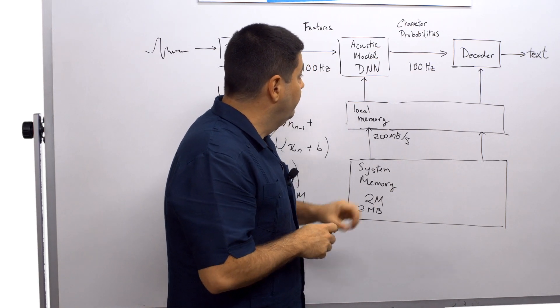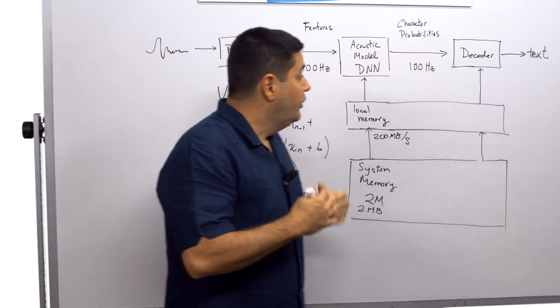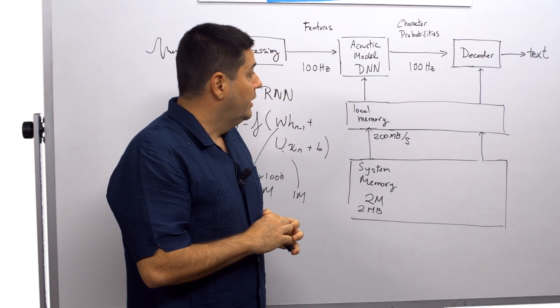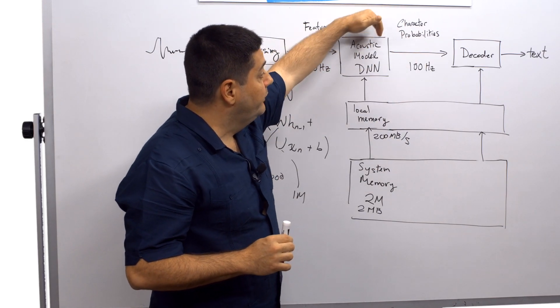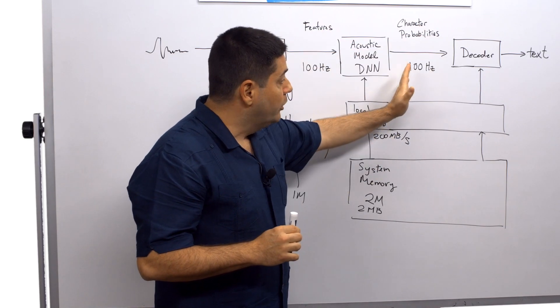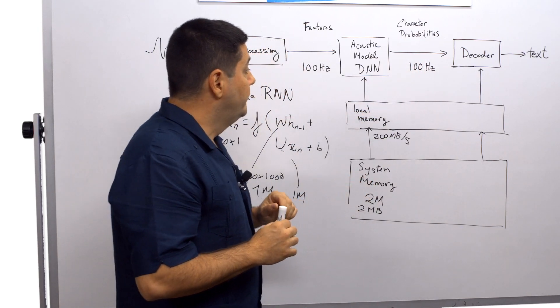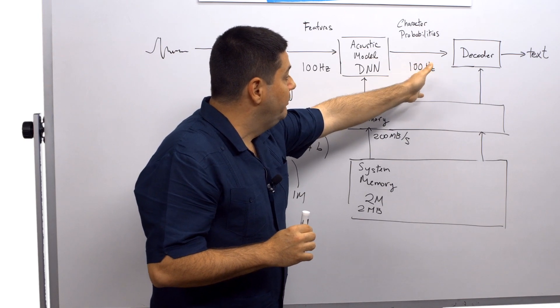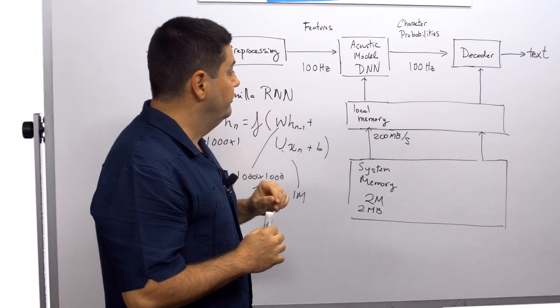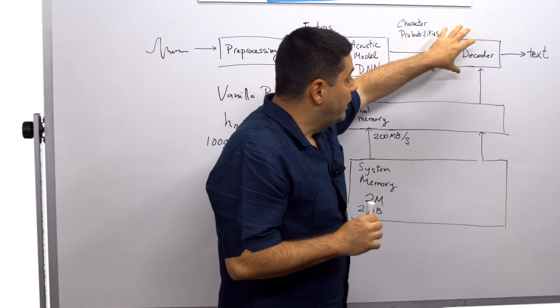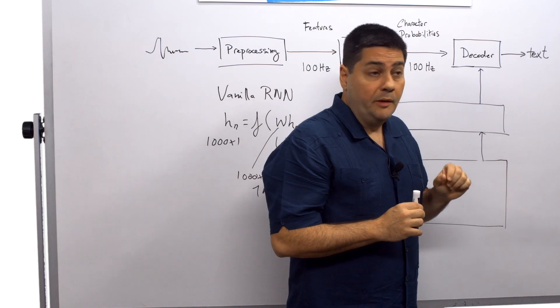Okay, so now we go into the rest of the processing where we have a decoder. And the decoder will take in the output of the network, which is a set of character probabilities. Those are also streaming in at 100 hertz. And each one of these will give a probability for a unit of sound corresponding to the input features. The job of the decoder is to take these probabilities and convert them to the transcribed text.